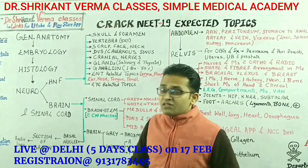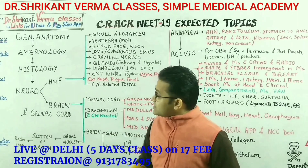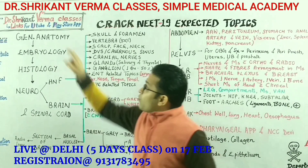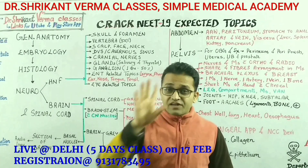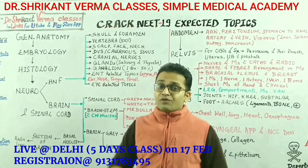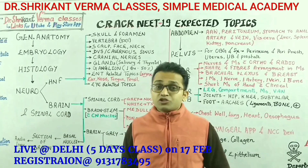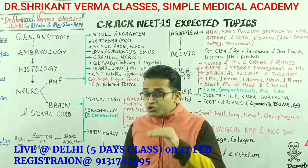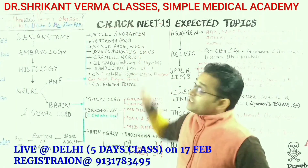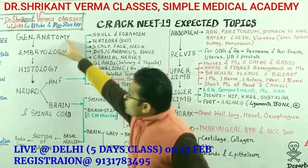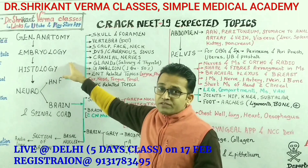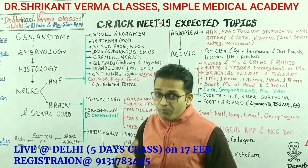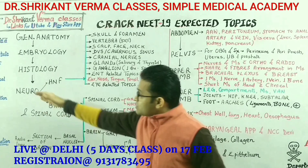This is the last time revision. What is the most high-yielding topic? Remember, one question from general anatomy will definitely be asked, one question from embryology will be asked, and one question from histology will be asked. Because these are less output topics, we will see these topics later. The maximum output topic for your anatomy is the neuro part.